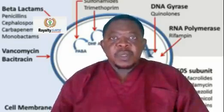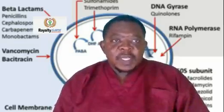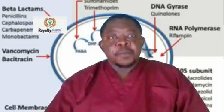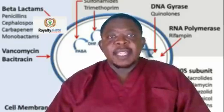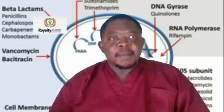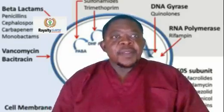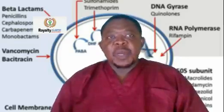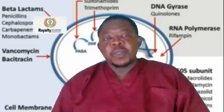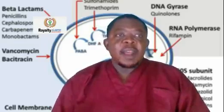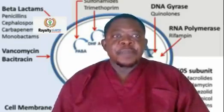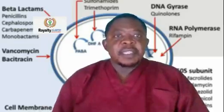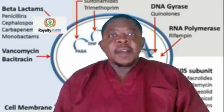Aminoglycosides will prevent the effective proofreading of the proteins produced by the bacteria. They will cause incorrect amino acids — the basic building blocks of proteins — to be inserted into the peptide chain.